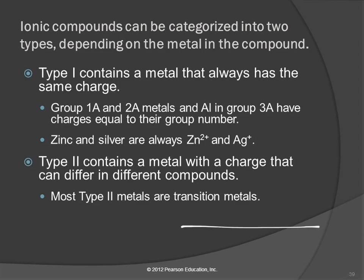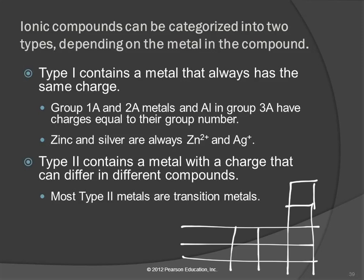Let's see how we can see that from the periodic table. Here's aluminum — this is group 3A. I've drawn just this little corner of the periodic table. We know that aluminum is +3 because it's in group 3A. Then we think about going down the stairs — down one step from aluminum is zinc, and the charge is one less. Going down one more step, the charge goes down one more, and it's silver.